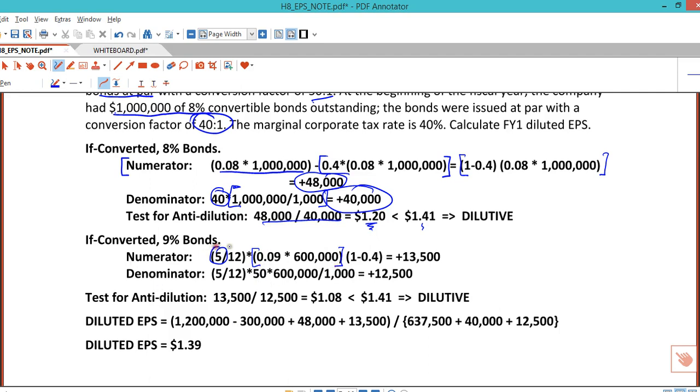The amount of annual interest is nine percent times six hundred thousand, so the amount of five-twelfths times that is the amount of interest expense during the year. We take that times one minus the tax rate and we get thirteen thousand five hundred for the numerator. Again, we take five-twelfths because these shares aren't outstanding the full year. Six hundred thousand divided by a thousand, that's six hundred shares issued times 50 which is the conversion ratio—it's twelve thousand five hundred. To test for anti-dilution, we take the numerator we calculated over the denominator and we got 108, which is way less than basic EPS, so we say it's dilutive.